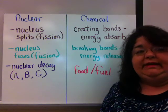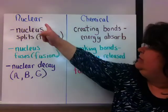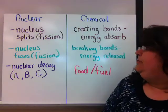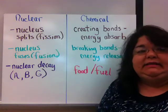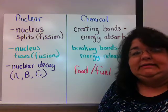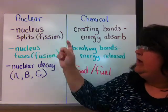There are different forms of energy that we need to talk about. The first two are listed here, nuclear and chemical. Nuclear energy is anything that involves the unstable nucleus of an atom. So if the nucleus splits, we call it fission.